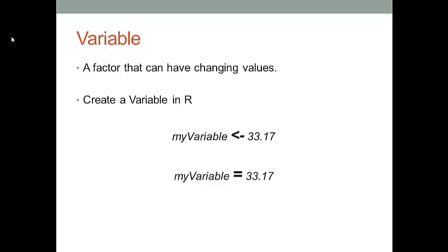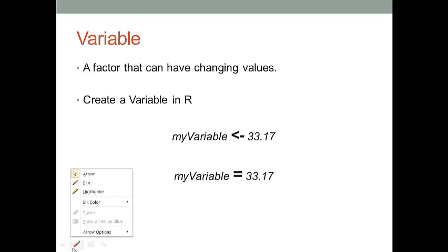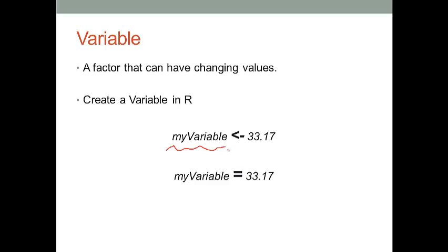This slide shows everyone how to create variables in R. You have two options to create a variable. Let's talk about them one by one. First option: on the left you have a variable name — for instance, a variable called myVariable. On the right you have the value for this variable. In the middle, you have a combination of a less-than sign and a small dash, meaning you want to give the value on the right to the variable on the left.